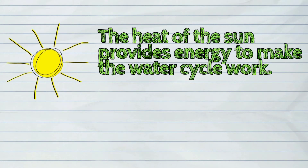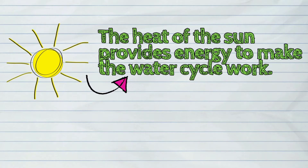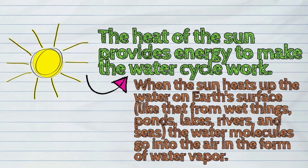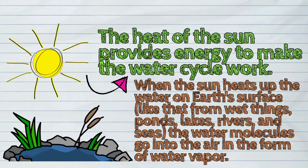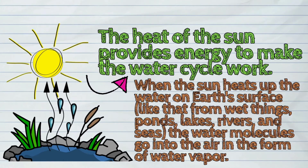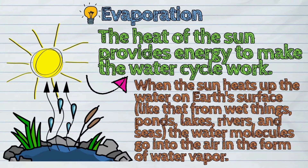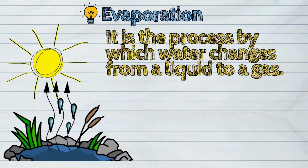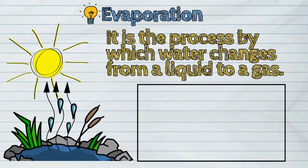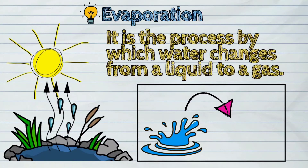The heat of the sun provides energy to make the water cycle work. When the sun heats up the water on Earth's surface — like that from wet things, ponds, lakes, rivers, and seas — the water molecules go into the air in the form of water vapor. This process is called evaporation: the process by which water changes from a liquid to a gas.